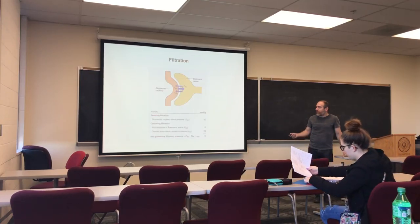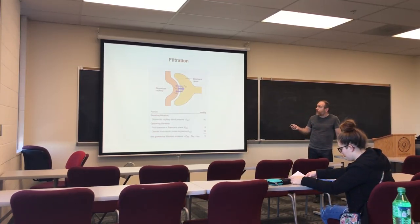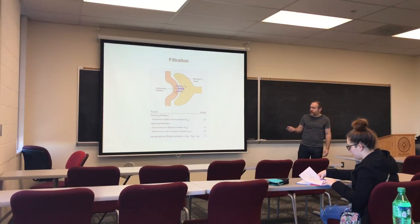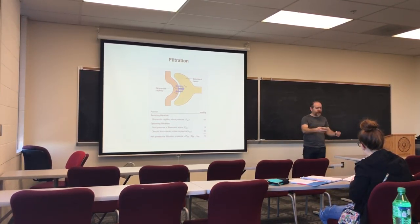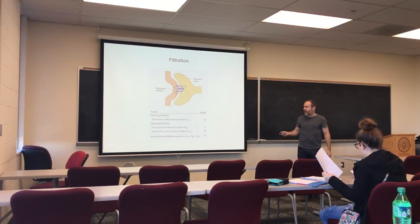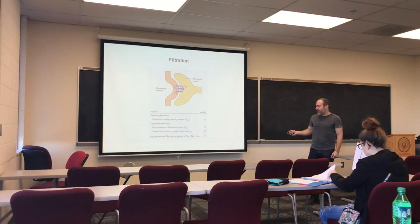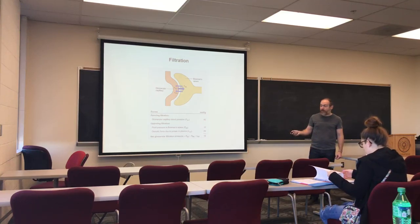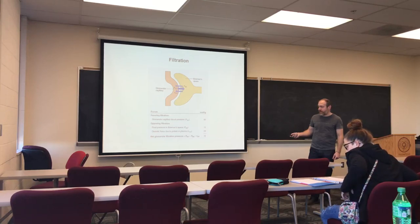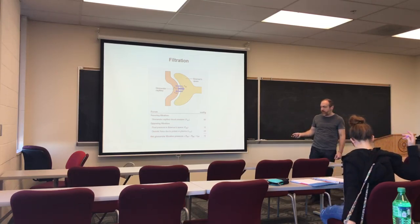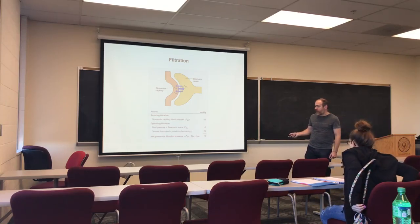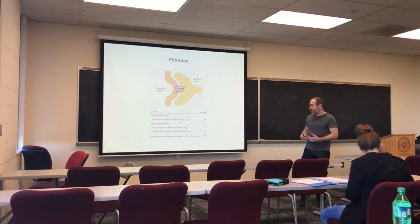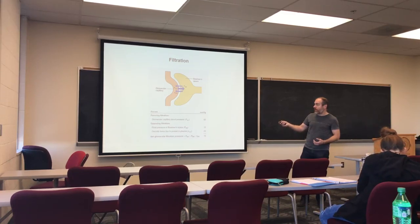In the process of filtration, different pressures favor or oppose filtration. Overall, the forces favoring filtration are larger than the forces opposing filtration, resulting in a net glomerular filtration pressure — which is the sum of these pressures. In normal conditions it is approximately 16 millimeters of mercury, which ensures that all the blood will be filtered.